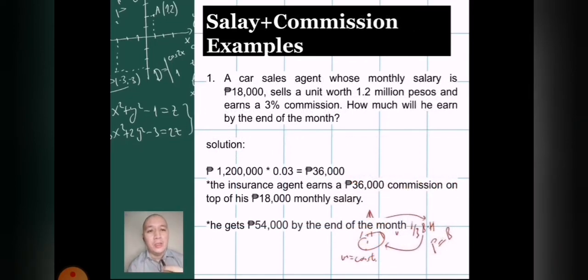A car sales agent whose monthly salary is ₱18,000, for example, and he or she sold a unit worth ₱1.2 million pesos and earns a 3% commission. So how much will he earn by the end of the month? Take note, he has a salary which is ₱18,000, and then there's a commission with a rate of 3% depending on the sales amount. So ₱1.2 million multiplied by 3% is ₱36,000. The car sales agent would then get ₱36,000 commission on top, aside from his ₱18,000 monthly salary. So overall, by the end of the month we could say that this car sales agent would get ₱54,000 pesos.